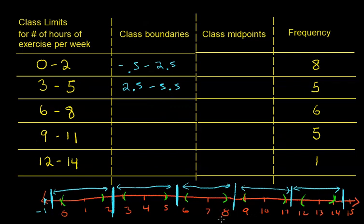What's between 8 and 9? That would be 17 divided by 2, which is 8.5. So this bin here goes from 5.5 until 8.5. This bin goes from 8.5 to 11.5. Lastly, this one goes from 11.5 until halfway between 14 and 15, which is 14.5.